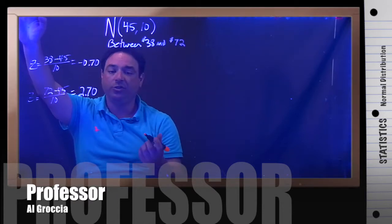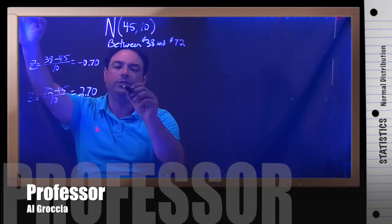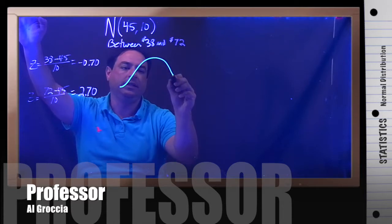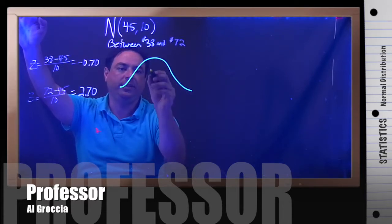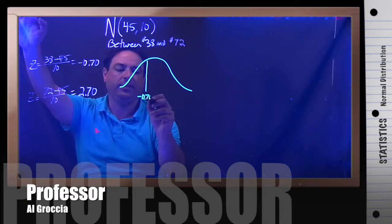Okay, so let's draw what's going on. So we have a normal curve, and our first one is negative 0.7. So the center would be zero, negative 0.7 would be about here, negative 0.70.